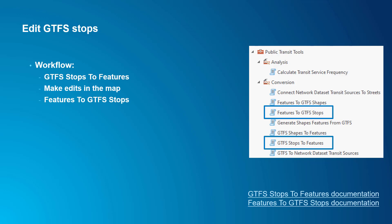You could even create a GTFS stops.txt file from scratch if you wanted to. You would just create a point feature class with all the necessary fields, create the features using the editing tools, and update the fields in the attribute table. And then you could just export it to GTFS using Features to GTFS Stops.